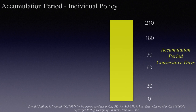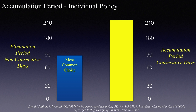The accumulation period is an uninterrupted period of consecutive days that begins on the first day that you are disabled, and during which the elimination period must be satisfied. So you have to be disabled for 90 days within the 210 days from the first date of your disability, in the example shown.